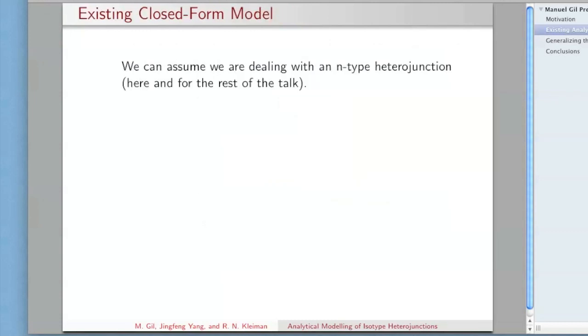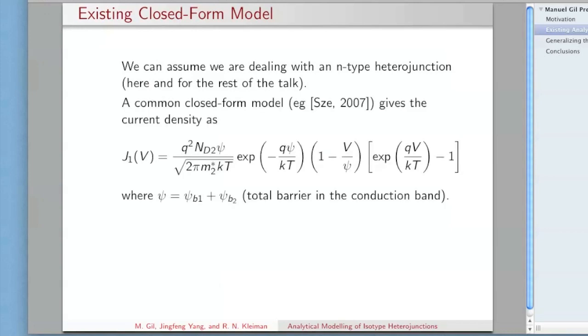If I keep on the assumption that we're dealing with an N-type isotype heterojunction, the expression that you'd find in the literature, for example in Sze, which is one of the canonical references for semiconductor device physics, looks like this. The main point there is that you have an inverse exponential dependence on the total barrier, and a direct exponential dependence on the voltage. Overall, these things behave qualitatively a lot like diodes.